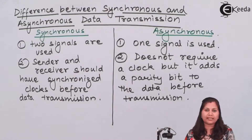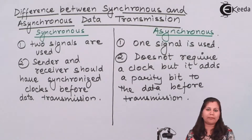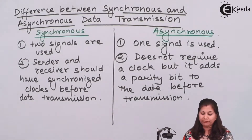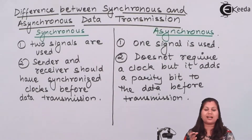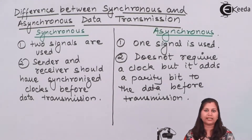Suppose we are transmitting an 8-bit data — to that 8-bit data a parity bit is added. The parity bits mean start and stop bits are added. The start bit indicates from which position the data is starting, and the stop bit indicates the ending of the data. So the difference is that the starting and ending of the data is indicated by the clock pulse in synchronous, and by the start and stop bits in asynchronous.